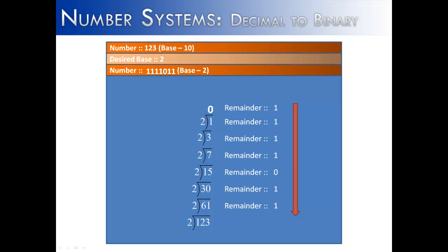There are some special relationships in number systems. One of those is a relationship between base 10 and binary. We have shown you how to use the ladder technique to take a number in base 10 and convert it into base 2. This works for all bases — you divide the base into the number until you get a quotient of zero, then take the remainder to find the number you're looking for.